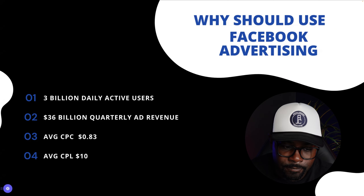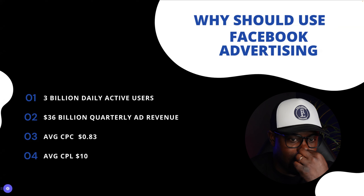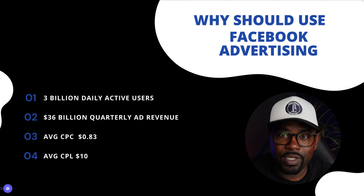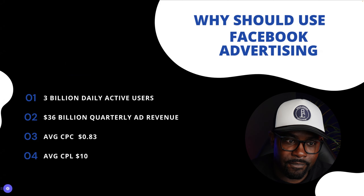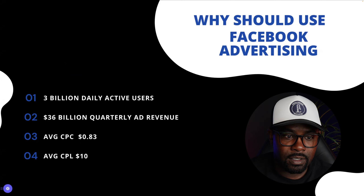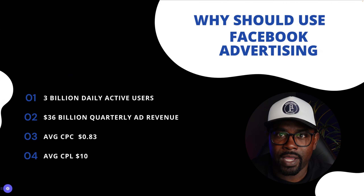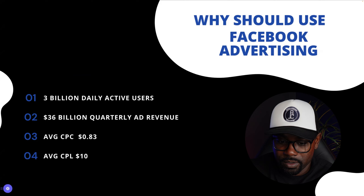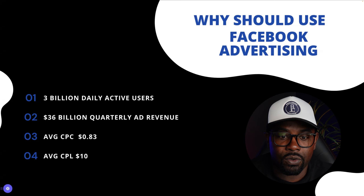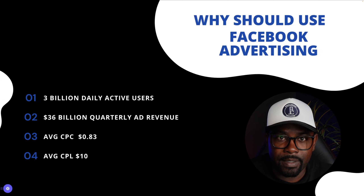The behavior of humans has changed and we need to go where the humans are. My mentor always says you don't need more money — you need more people. The Facebook platform is where all the daily active users are, so we need to use it. More importantly, this is where the money is: $36 billion a quarter is being spent on ad revenue. If you want to have success, do what successful people do — invest where rich people are investing their money. If $36 billion a quarter is going into ad revenue for Facebook, that means it's working.